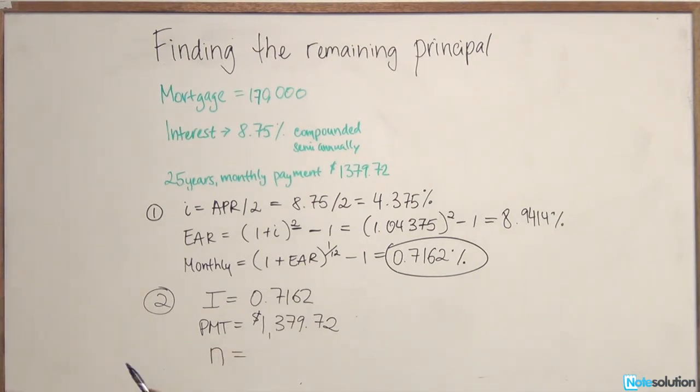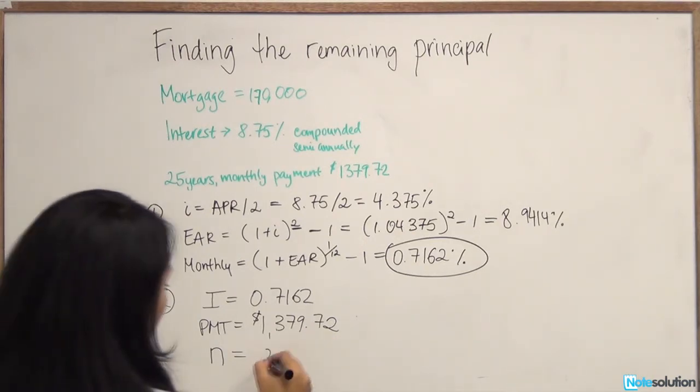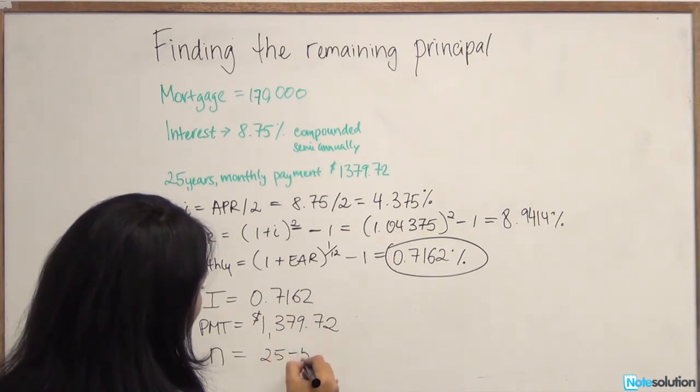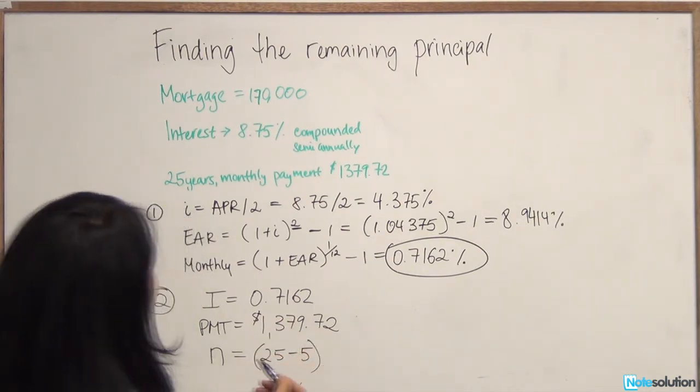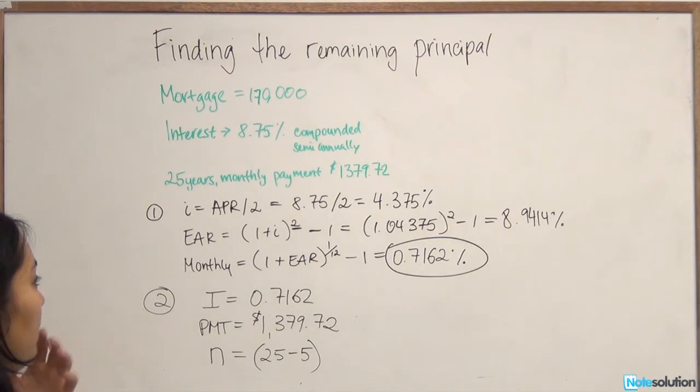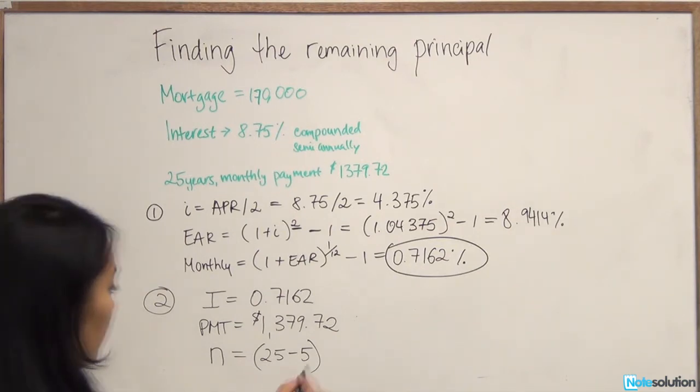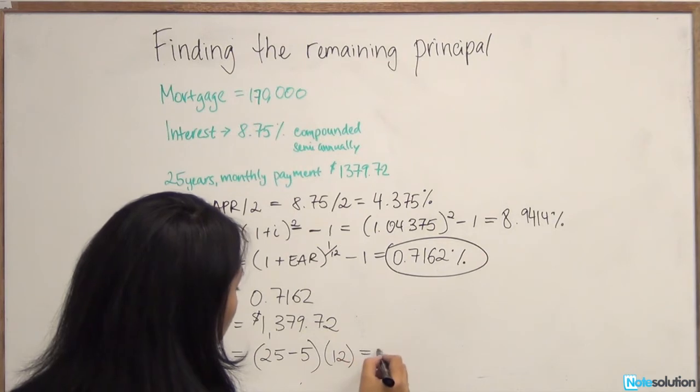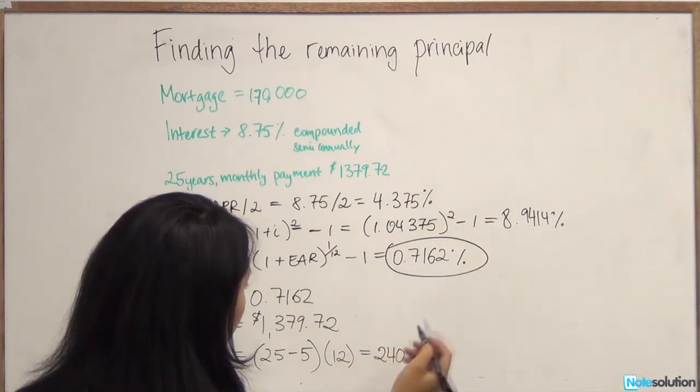What is our N? The beginning of the mortgage was 25 years. Five years have elapsed, so 25 minus 5 gives us 20 years. It's very important that we keep to the same terms here, so we're going to convert it to months by multiplying it by 12. We have 240 time periods.